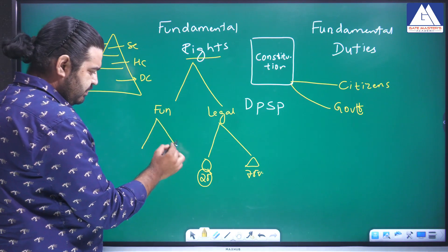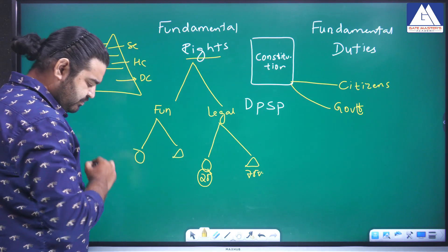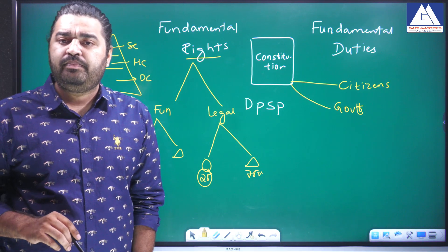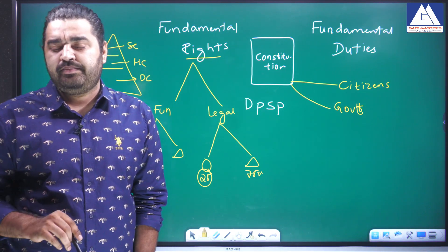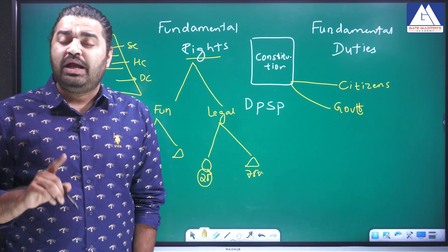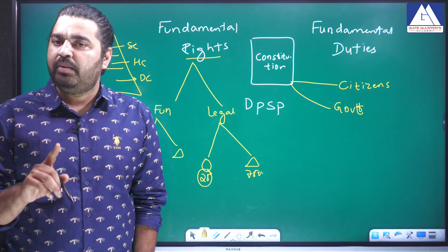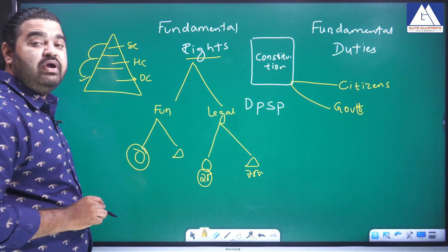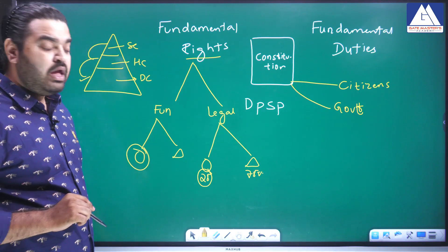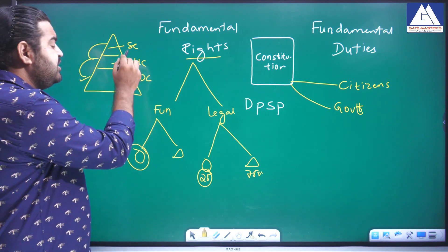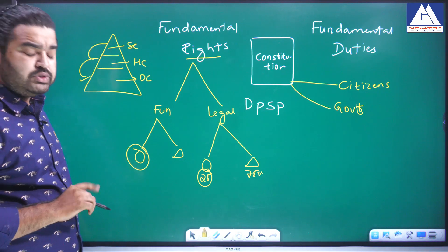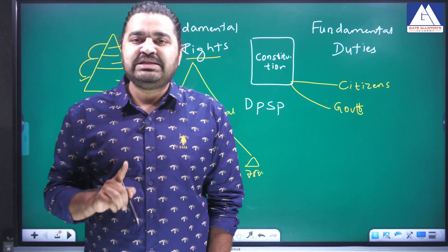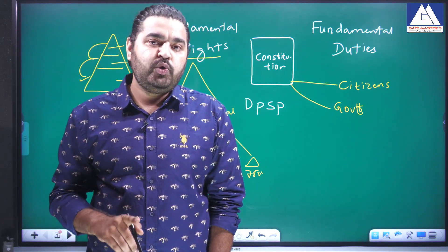Now coming to fundamental rights — consider a scenario where a male and a female both want to go to a temple, but the female is restricted on the basis of biological reasons. As you know, the right to religion is your fundamental right and you cannot prevent anyone from entering a temple. In this scenario, her fundamental right is curtailed, and she can move to the High Court or Supreme Court directly.